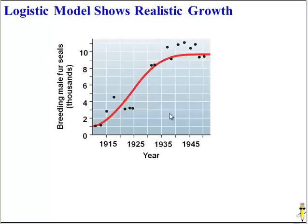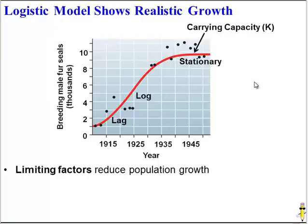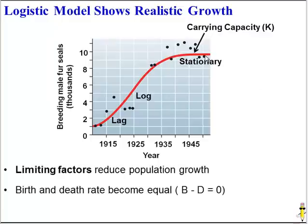In reality, that's not how the world works, so we have the logistic model that shows realistic growth. Initially the population increases slowly — this is the lag phase. Then it starts to increase really quickly — this is the log or exponential phase. But eventually growth levels out and stops, giving us a stationary phase where the growth rate is zero. This is because the population has reached its carrying capacity: the maximum size that the environment can support. At this point, birth rate and death rate are equal, which is why the overall growth rate is zero.